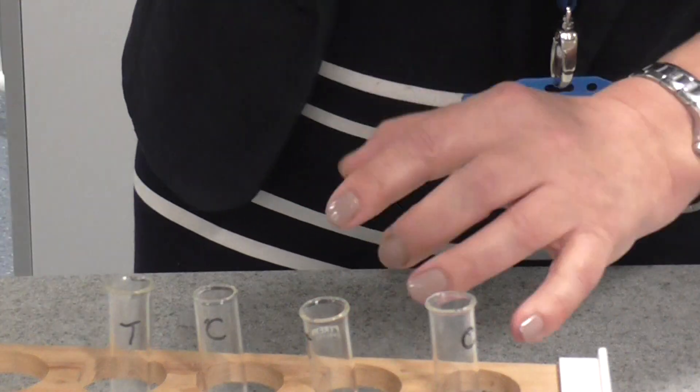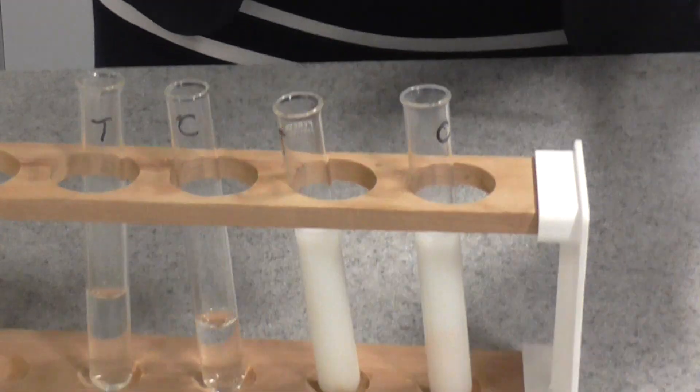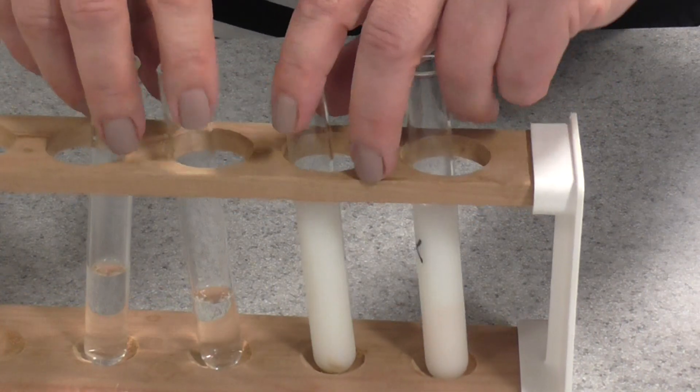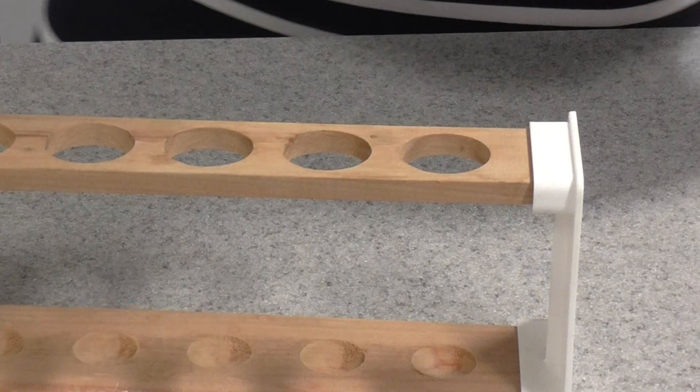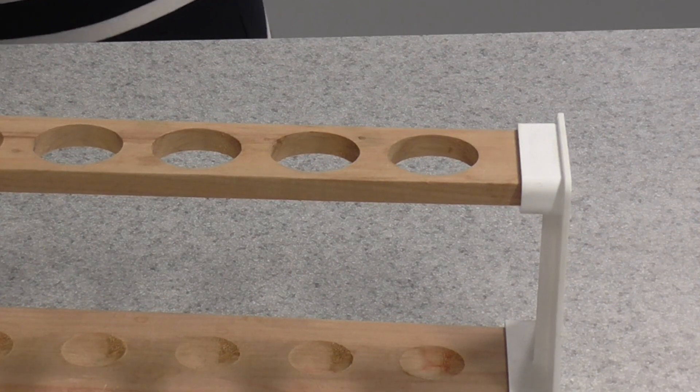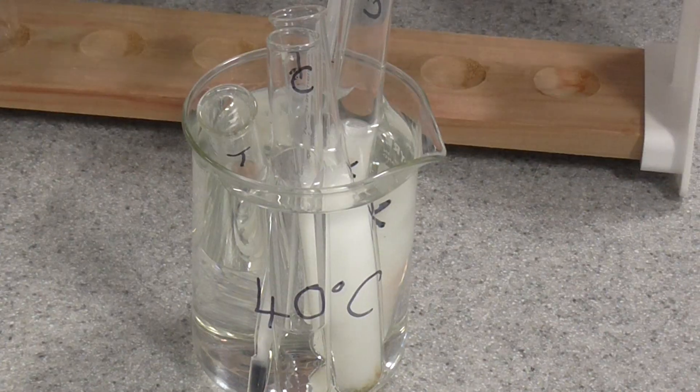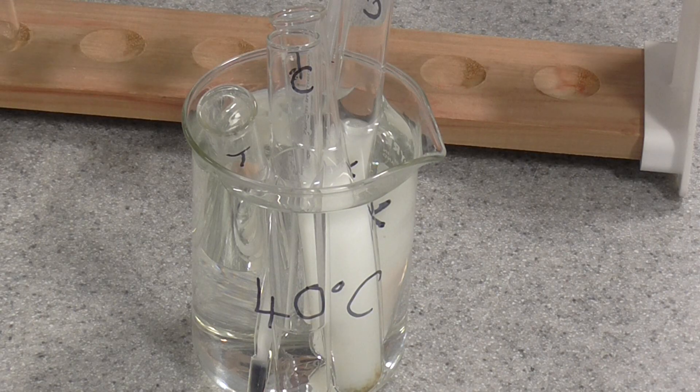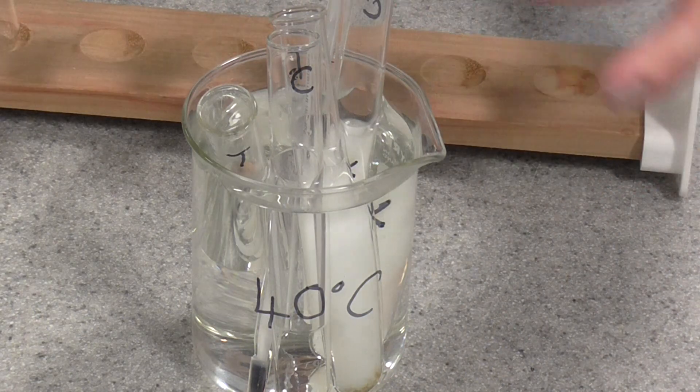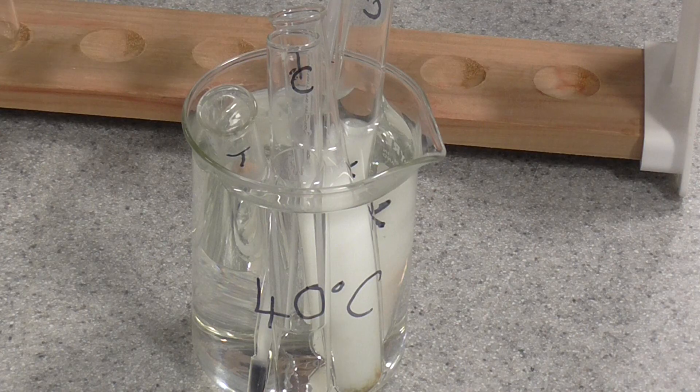Before we mix the enzyme and the milk, we need to make sure that everything is at the right temperature. So you're going to place these in the water bath, and you're going to leave them in there for maybe 5 minutes until they actually come to 40 degrees. You want all your solutions at 40 degrees before you mix them.